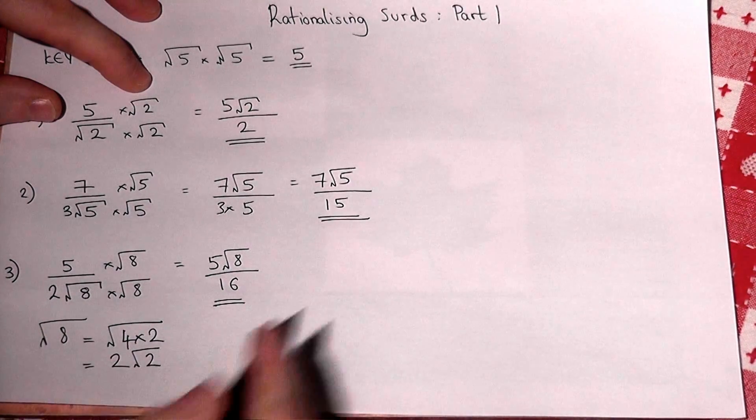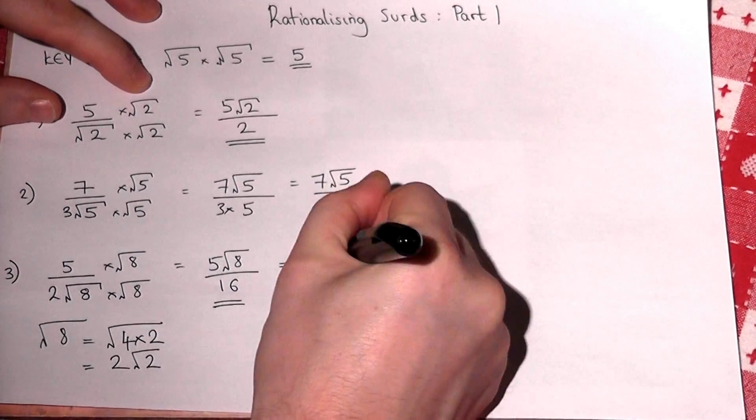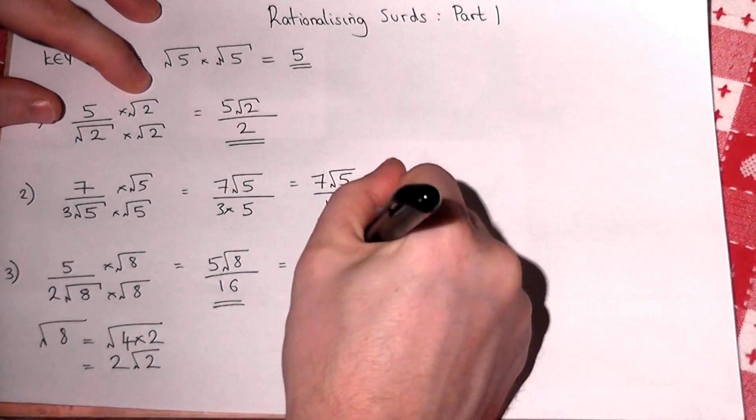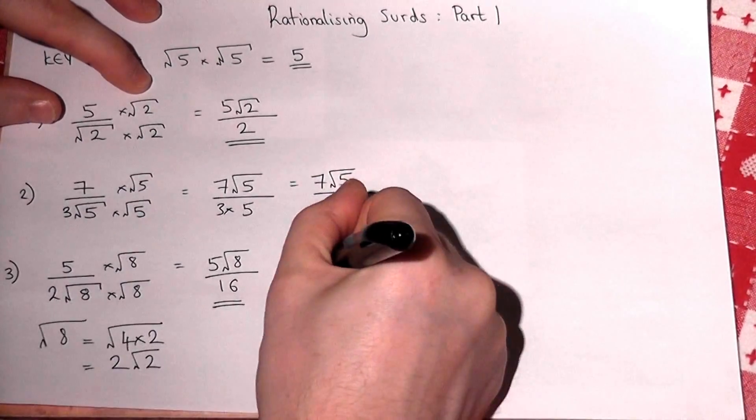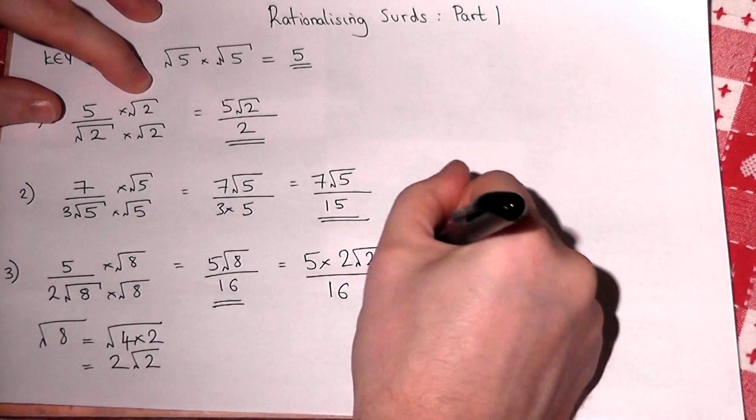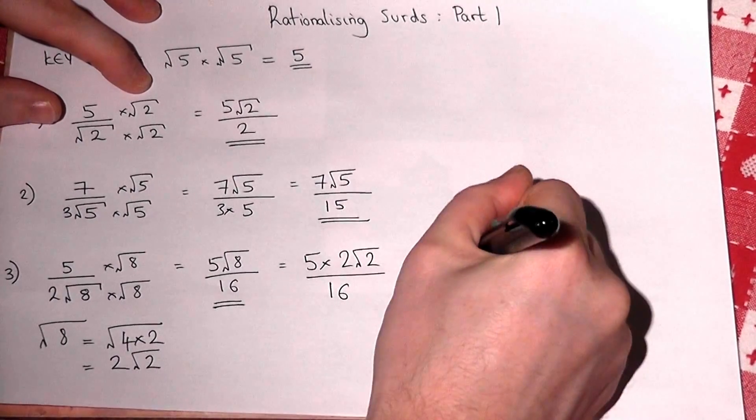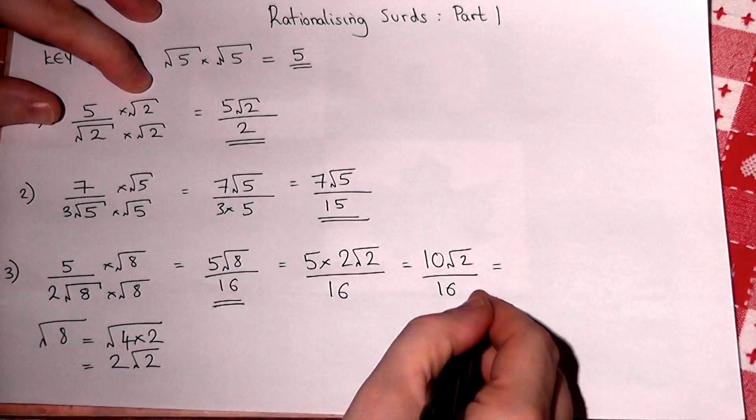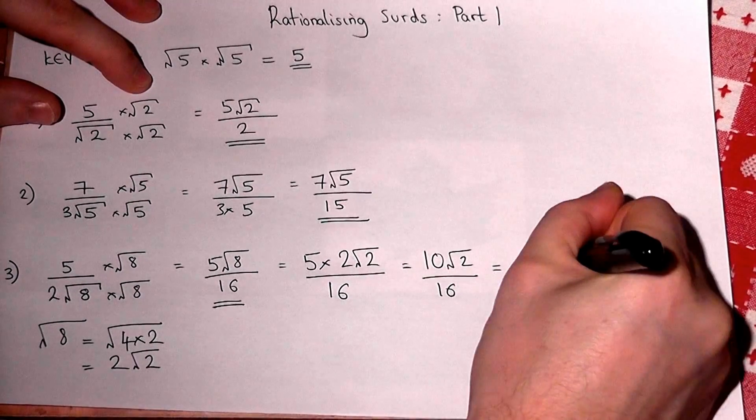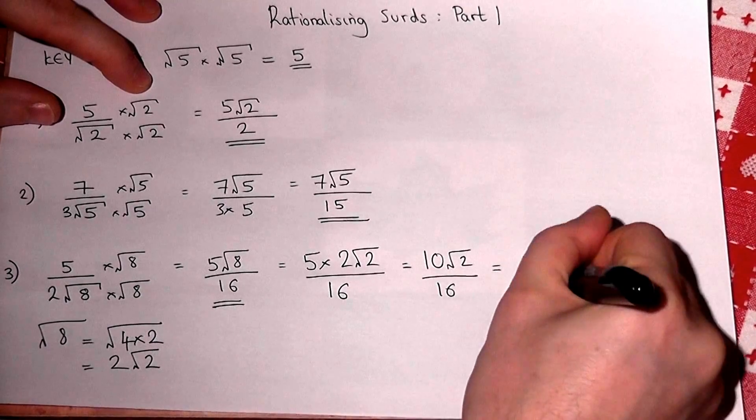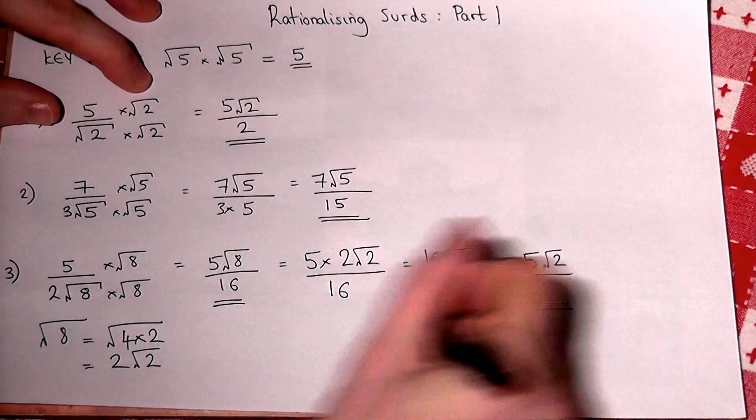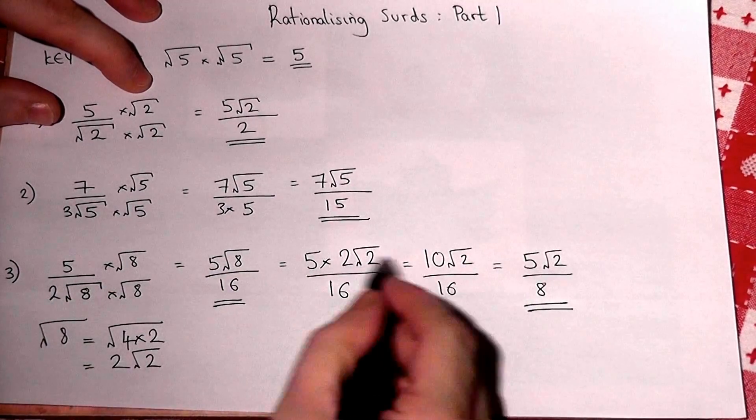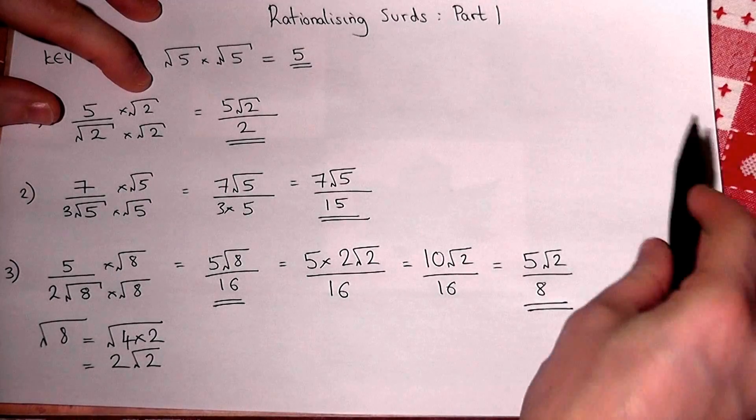So √8 is 2√2, so this is the same as 5 lots of 2√2, all over 16. Five times two is ten, so 10√2 over 16. And ten sixteenths is five eighths, so 5√2 over 8. It has been rationalized and also put into its simplest possible form.